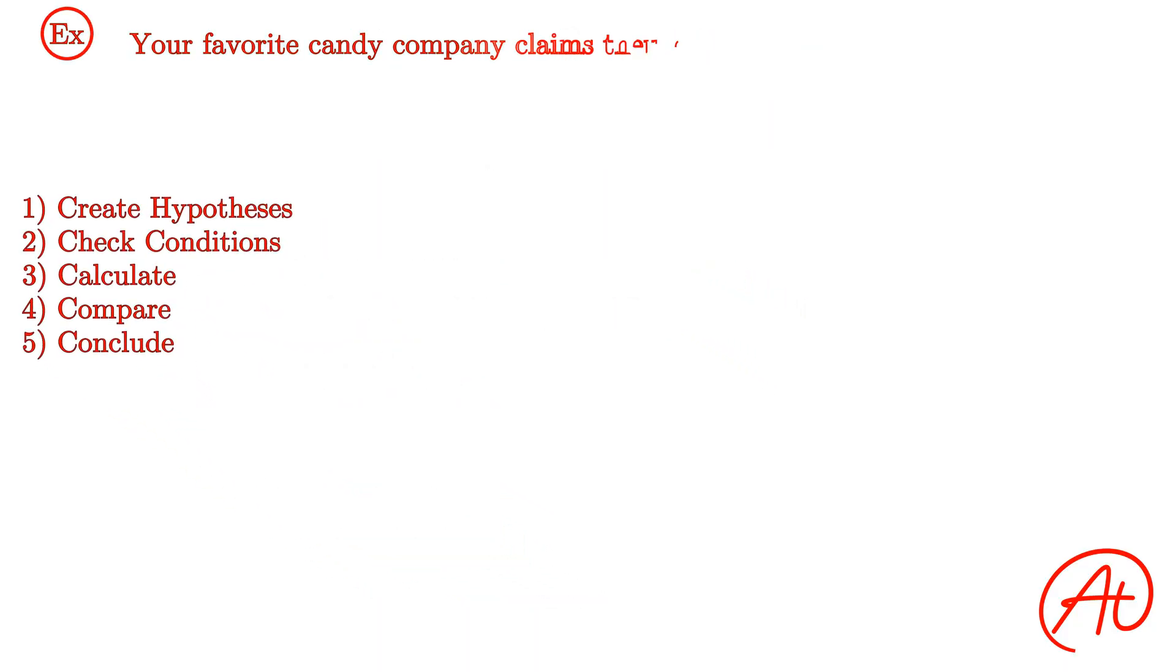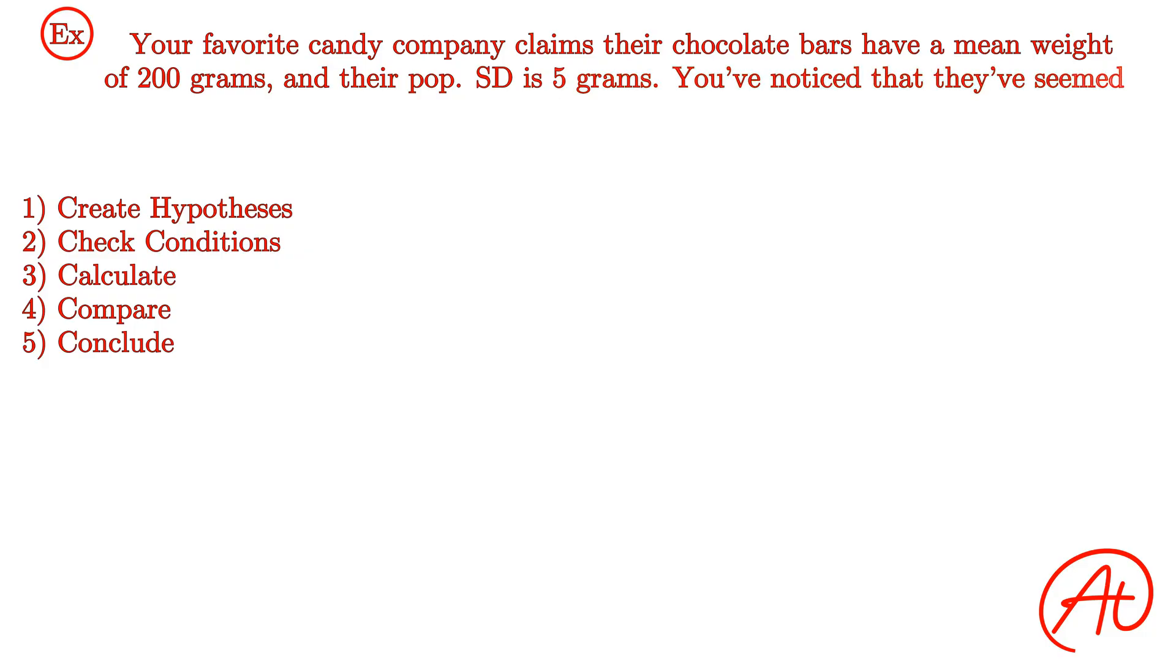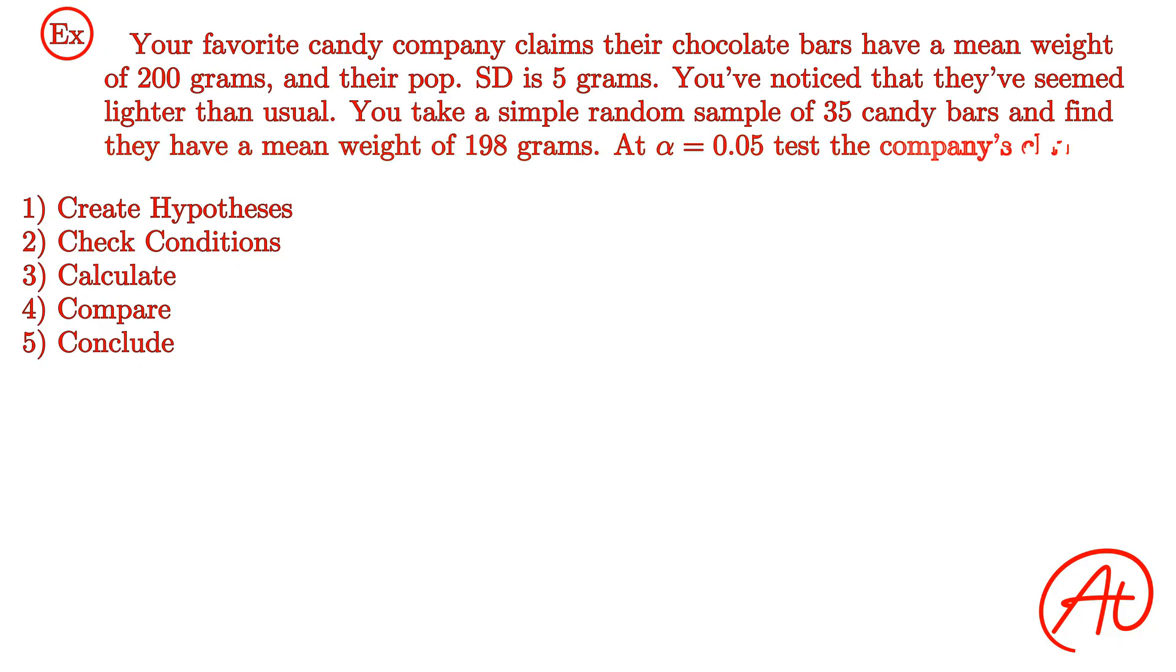Let's say that your favorite candy company claims that their chocolate bars have a mean weight of 200 grams and their population standard deviation is known to be 5 grams. But lately, you've noticed they've seemed a little lighter than usual. You decide to sneak into their factory and take a simple random sample of 35 candy bars before you're caught. When you weigh them, you determine that the mean weight of those bars is actually 198 grams. At a significance level of alpha equals 0.05, test the company's claim.